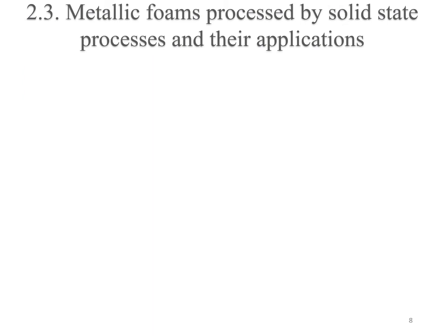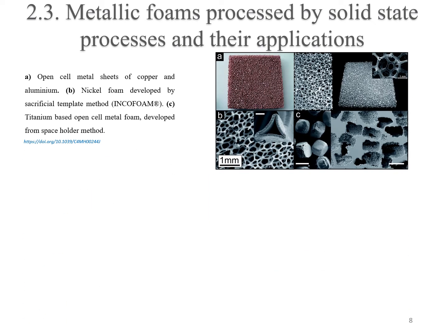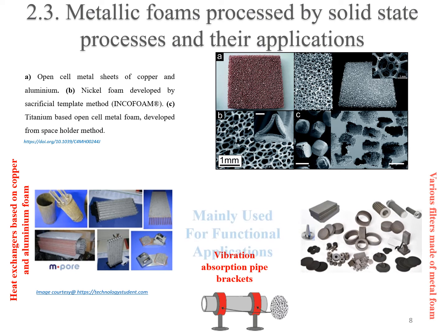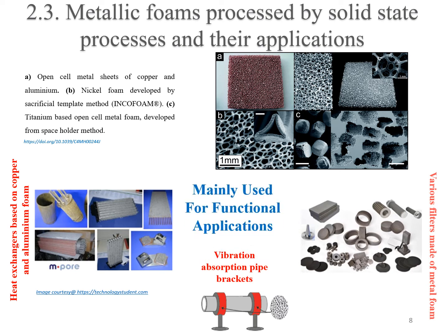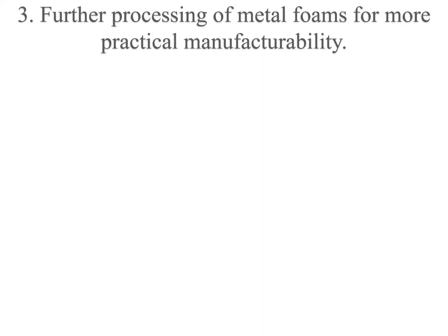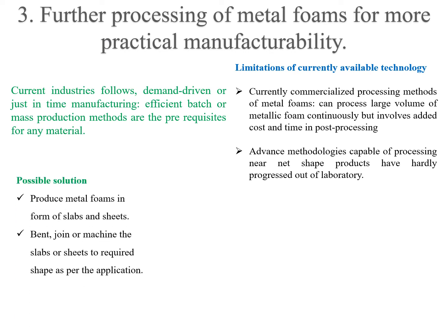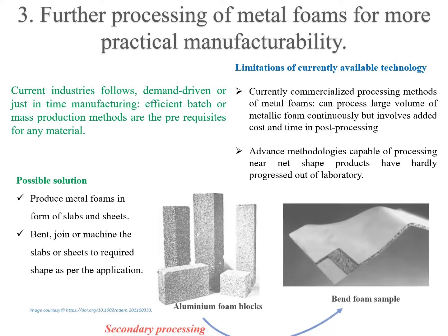Metal foams processed by solid state methods are usually open cell foams and are used as heat exchangers, vibration dampeners, or filters, but these materials are mostly limited to functional applications. The currently existing processing methods are incapable of developing near-net-shaped parts or producing metal foams in large volume. Henceforth, it may be difficult for them to meet current industrial standards. A possible solution is to produce metal foams in more generic shapes and then further process them to the desired shape per the application.